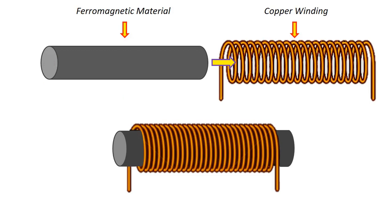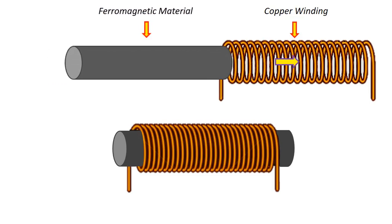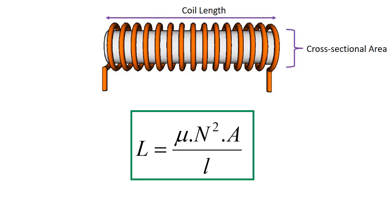There is a core inside the coil. This core is made of a ferromagnetic material with very good magnetic permeability, such as iron and steel. An insulated copper wire is wrapped around this core, which passes current very well. The coil is basically formed in this way.